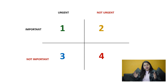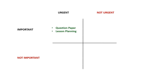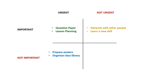Let's have a holistic look at this matrix. Say I have to make a question paper or do lesson planning — I'm going to put that in the first quadrant: urgent and important. Networking with other people or learning a new skill is important but not urgent, so it goes in the second quadrant. Preparing posters or organizing a class library is urgent but not something I personally have to do. And tasks like posting social media updates are neither urgent nor important, so they go in the fourth quadrant.